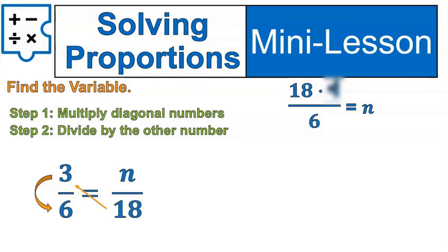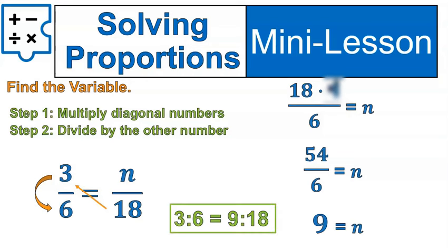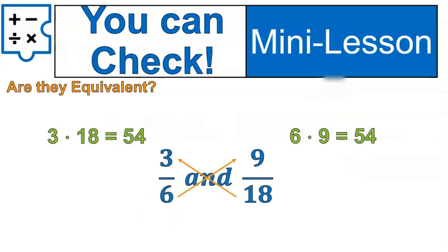18 times 3 is 54. We divide by 6 to get 9. So our ratio is 3 to 6, and 9 to 18. Those are our ratios. And when we put that equal sign between it, it becomes a proportion, or equivalent ratios. You can always check your work using cross multiplying to check to see that they're equivalent. We've done this before a lot.